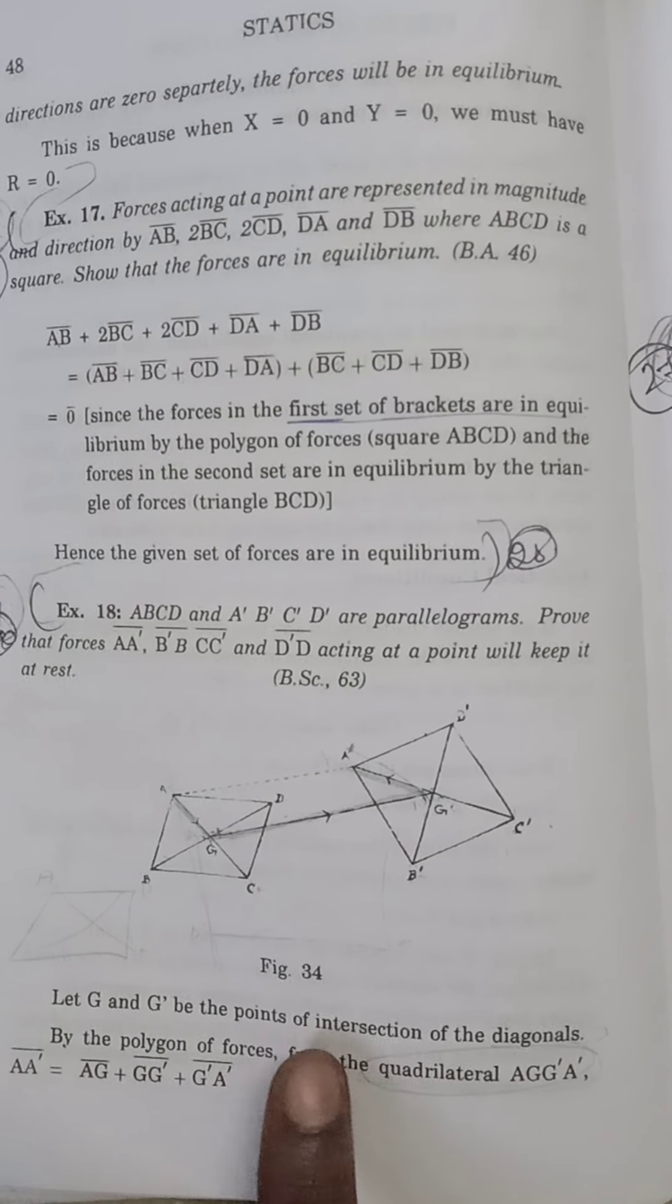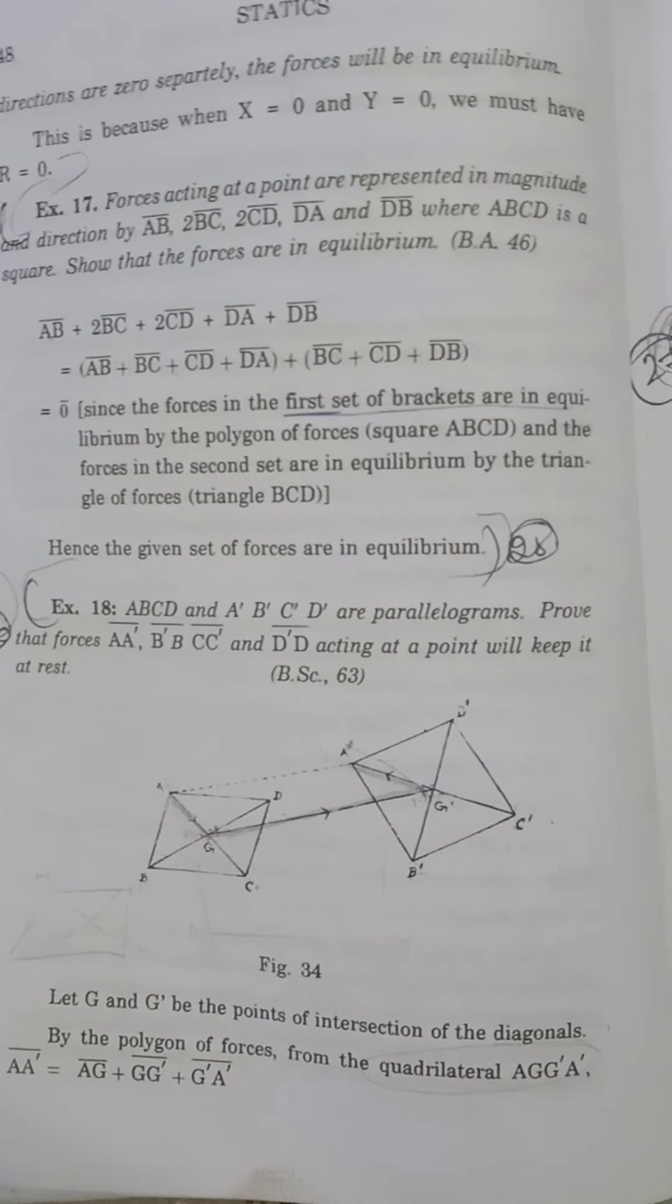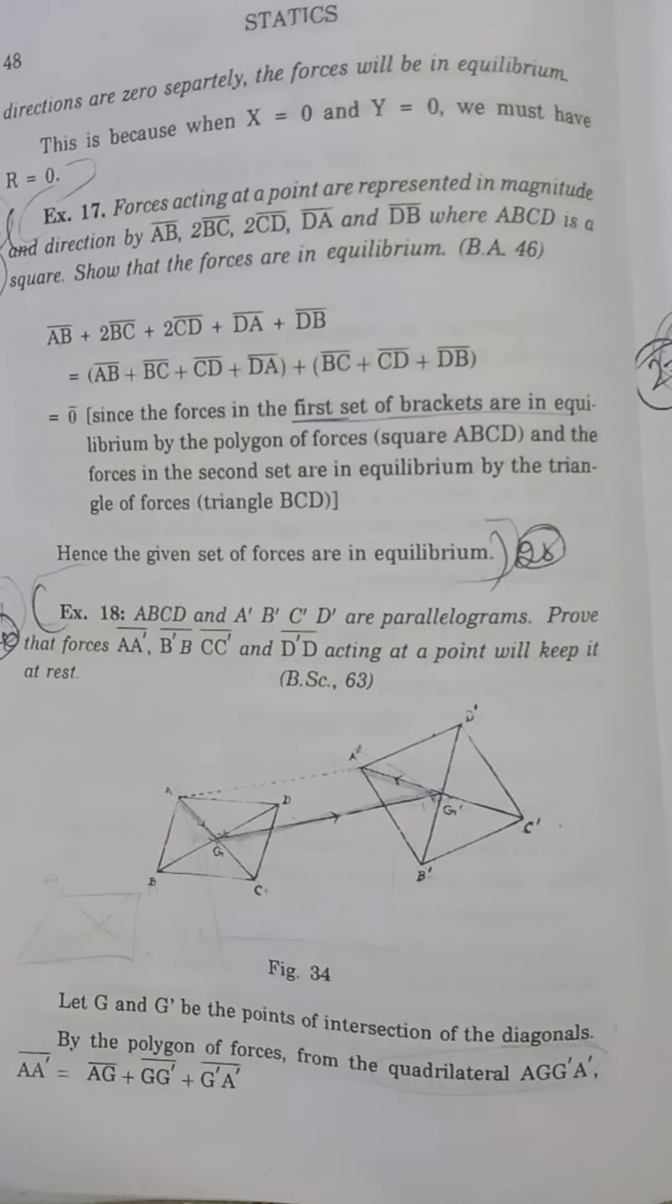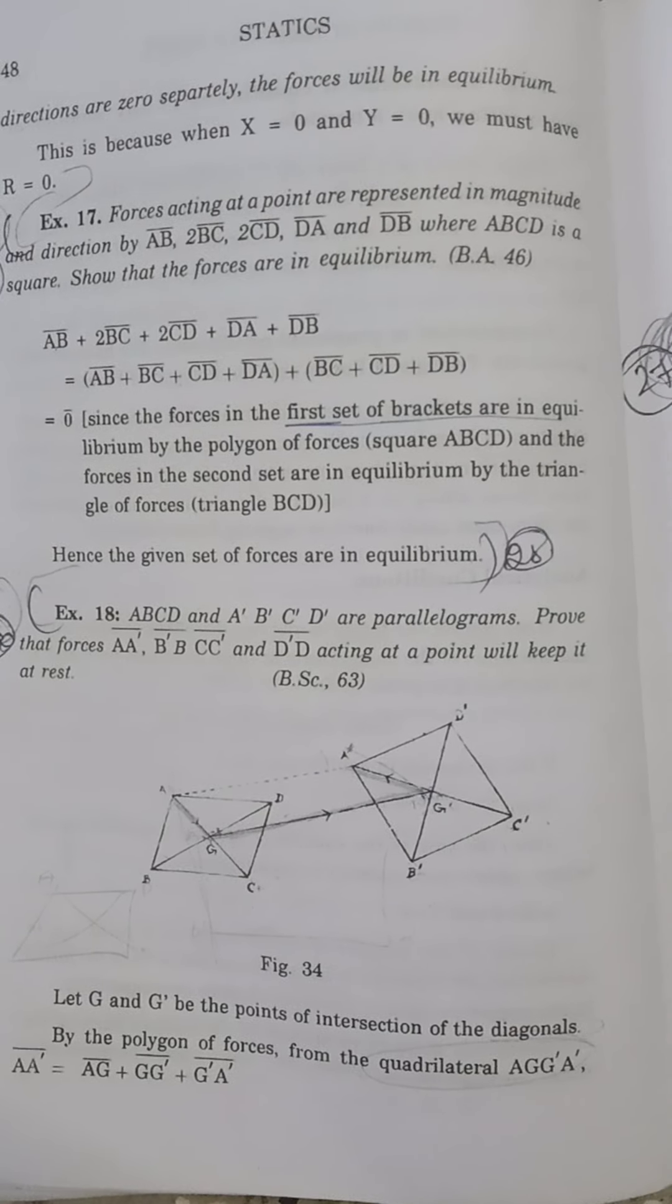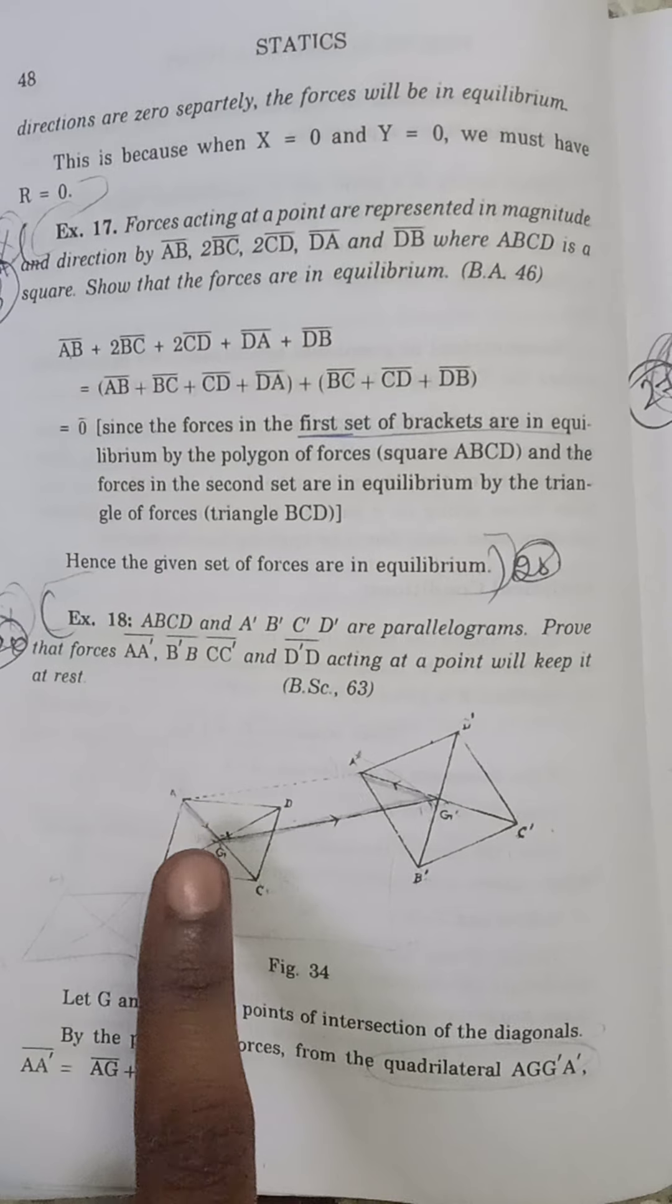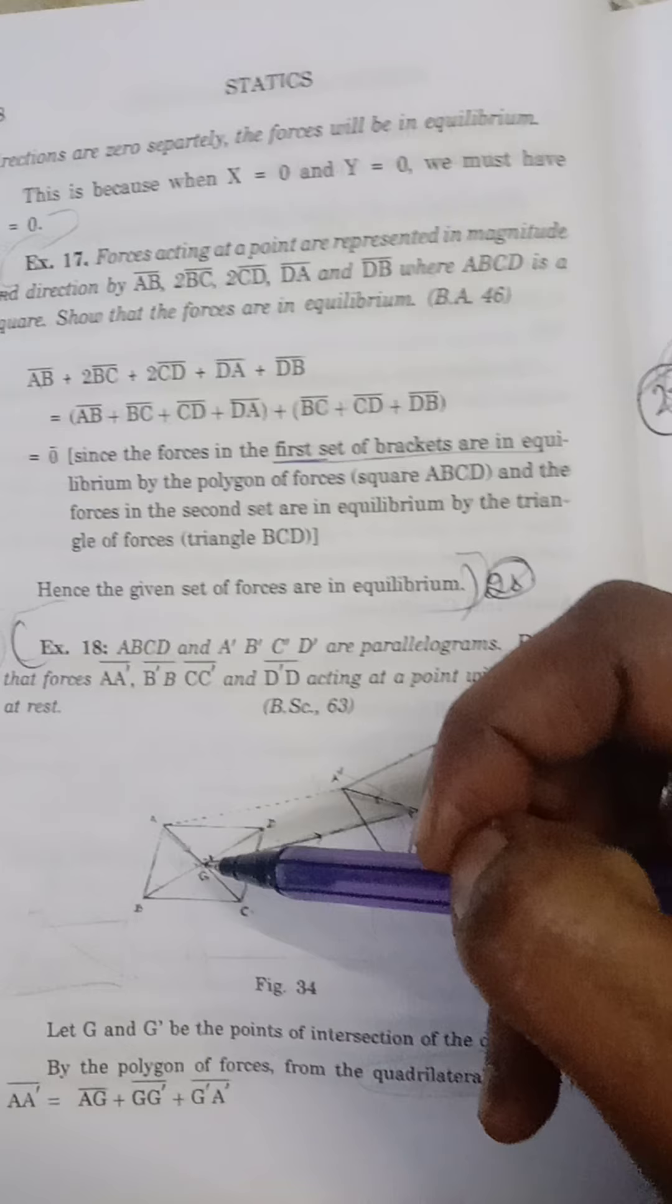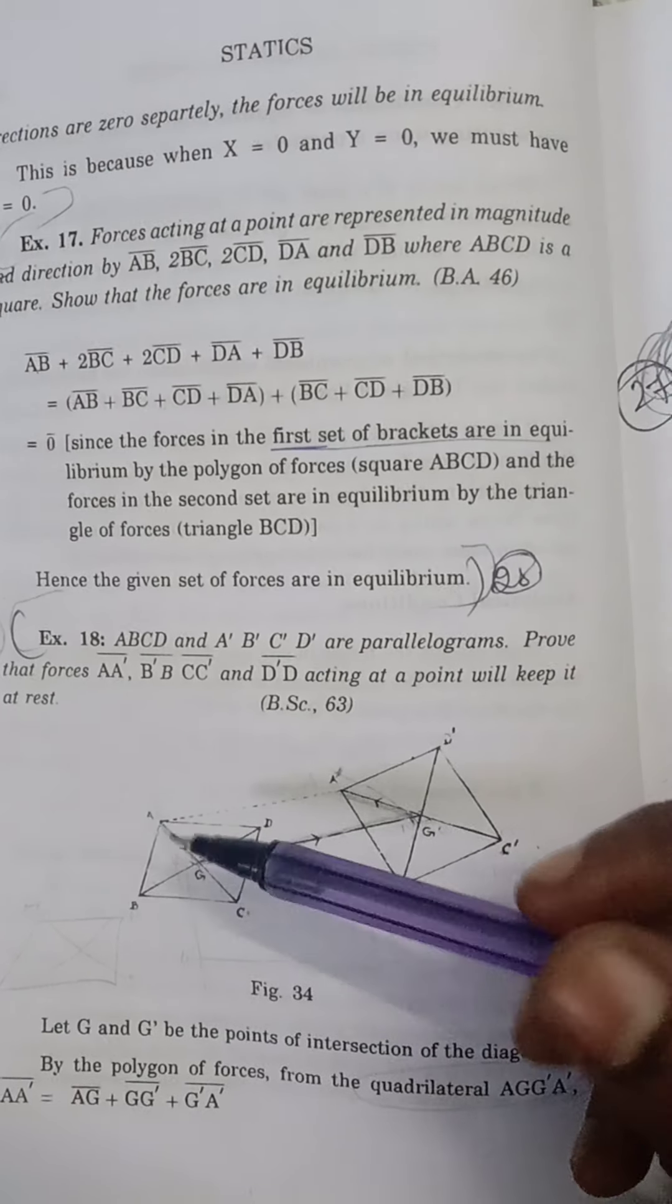Let G and G' be the point of intersection of the diagonals. By polygon law of forces from quadrilateral, AA' can be written as AG + GG' + G'A'.